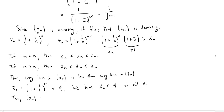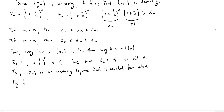Thus x_n is an increasing sequence that is bounded from above — we even have an explicit bound of 4. So by the monotone convergence theorem, the sequence x_n converges.